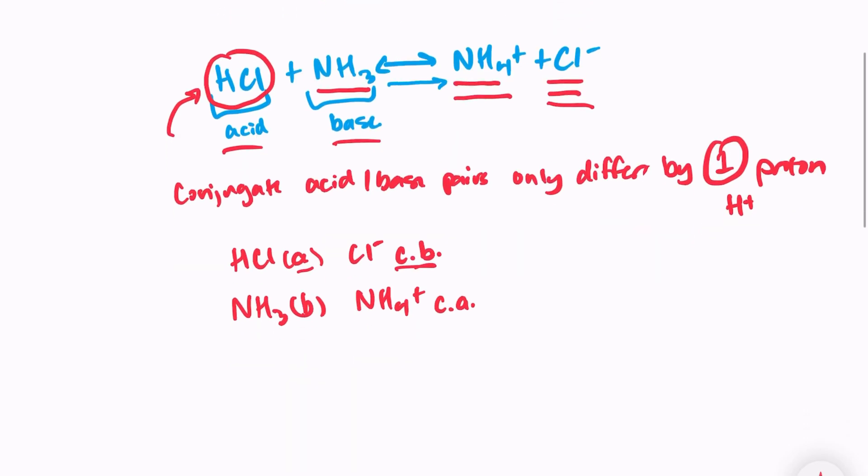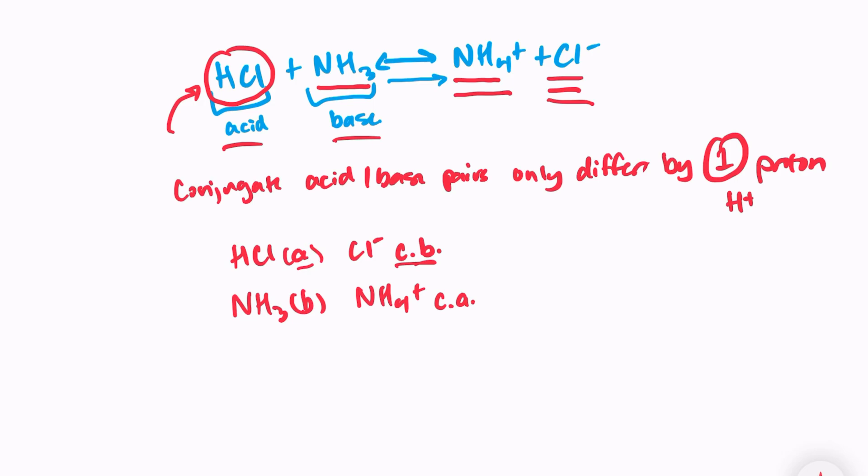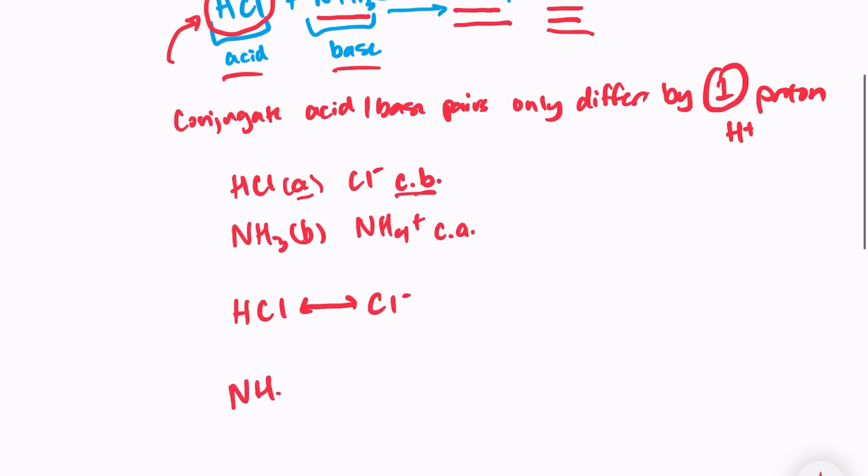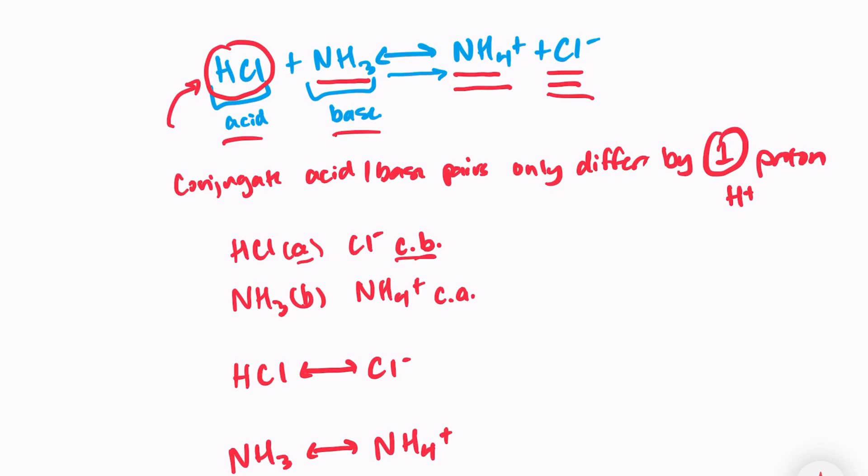One other way to look at this, which may be easier for some people, is we can break it down into mini-reactions. So if we look at HCl, it's going to form Cl-, and if we look at NH3 in this reaction, it's forming NH4+. And again, these two only differ from each other by one proton. And notice we have a double arrow. That means that it is a reversible reaction. So the forward reaction can occur, and the reverse reaction can occur.